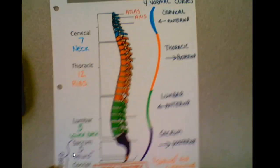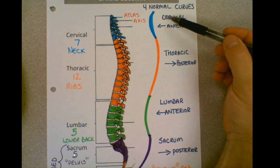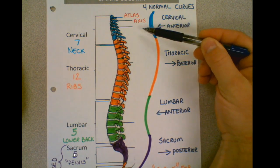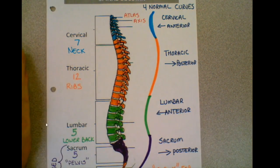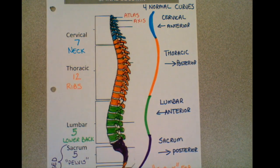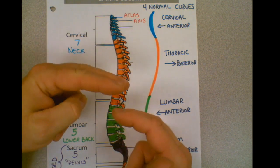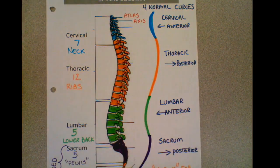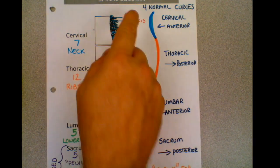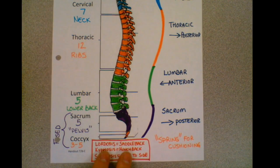So you need to know these curves. The normal curvatures are: cervical goes anterior, thoracic posterior, lumbar anterior, and then the sacrum back to posterior. This is going to allow your vertebrae to compress as we jump around. If this were just straight up and down, you could compress and herniate a disc really easily. But having this shape allows us to compress — it's a spring for cushioning.